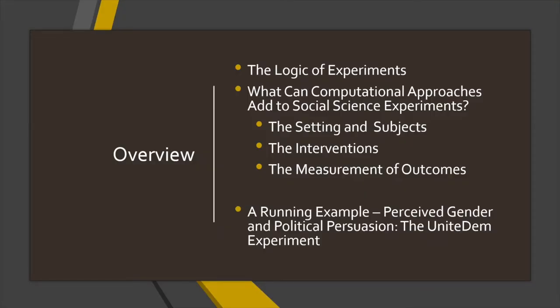Here's a little overview of what we're going to cover in this lecture. We'll start with a brief primer on the logic of experiments — why do we do experiments and what leverage do they give us over answering research questions that we can't get from other kinds of observational empirical work. Then we'll jump into what computational approaches can add to our social science experiments, looking at three different areas: the setting and subjects involved, the interventions or treatments we give to people, and the measurement of outcomes.